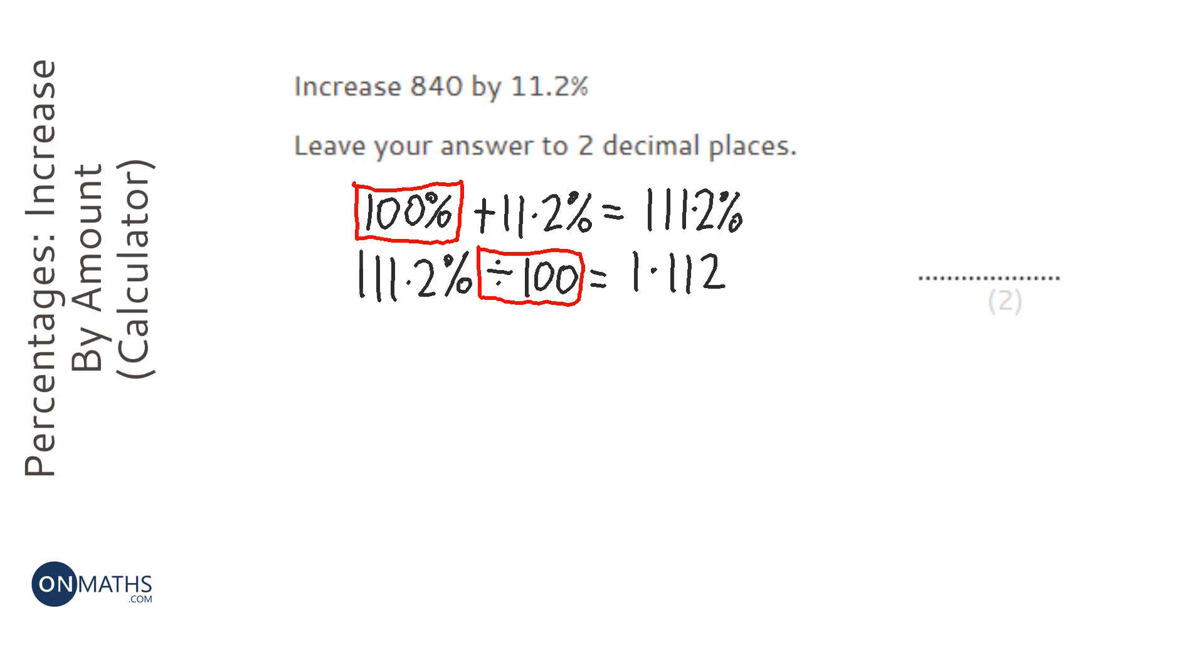from it would be 109.4 percent and then when we divide that by 100 it would be 1.094 instead. Now the beauty of this multiplier is all we need to do is get the amount which is 840 and on our calculator times it by 1.112, times it by the multiplier and it does all the hard work for